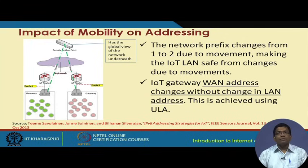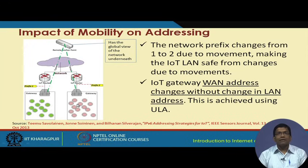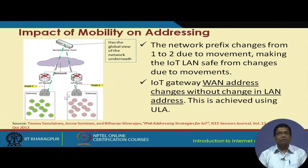This is a very important concept because it helps solve the problem of mobility. When a particular node changes its position from one network to another, the prefix also changes — for example from prefix one to prefix two. This makes the IoT LAN safe from changes due to mobility. The IoT gateway takes care of the address changes without changing the LAN address — within the LAN the address remains the same, but the VAN address changes via the unique prefix assignment.